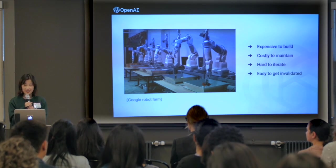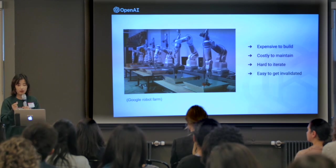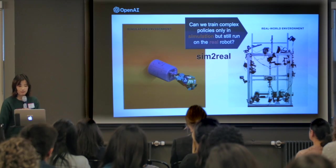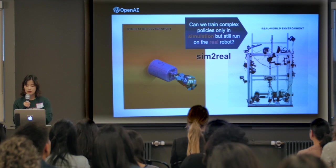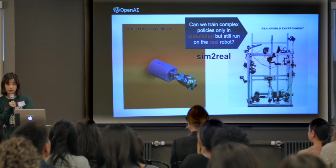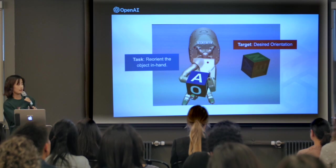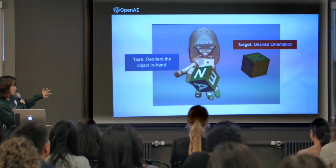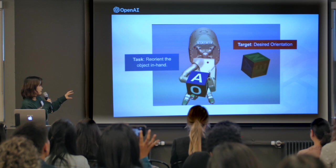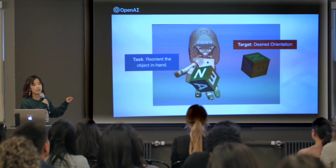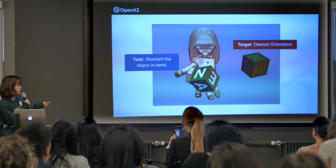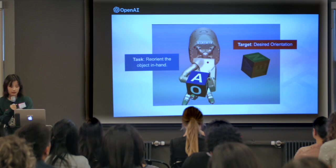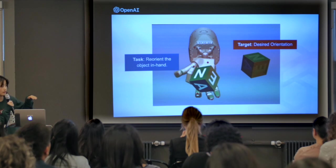Instead, we decided to take the sim-to-real approach: train your model entirely in simulation, but deploy it on physical robots. Here we show how we control the hand in simulation. The hand moves the object to a target orientation as shown on the right. Whenever the hand achieves the goal, we sample a new goal and keep going. We cap the number of successes at 50.